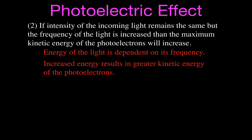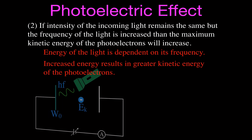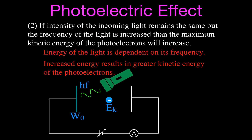We'll see that in the PHET simulation. Here is the diagram for the photoelectric effect: light shines on the plate, with energy calculated as h times f — Planck's constant times frequency. If the energy of that light is greater than the work function, the leftover energy is given to our photoelectrons as kinetic energy. As we increase the energy of this light and overcome the work function, whatever is left over gives those photoelectrons more and more energy.